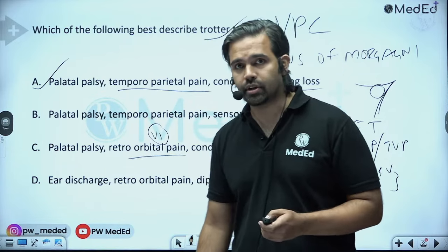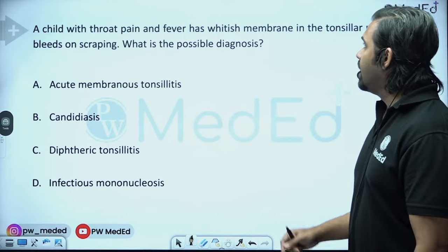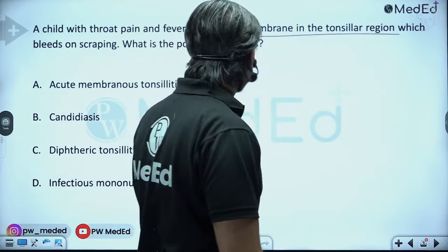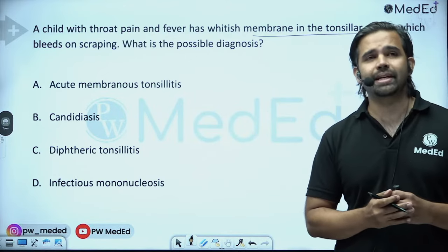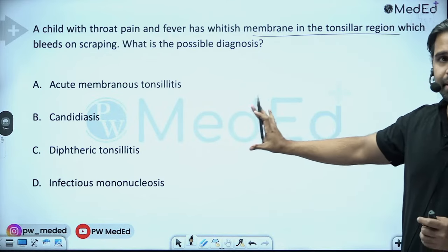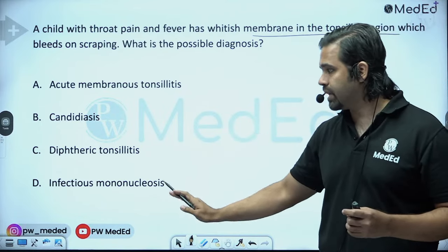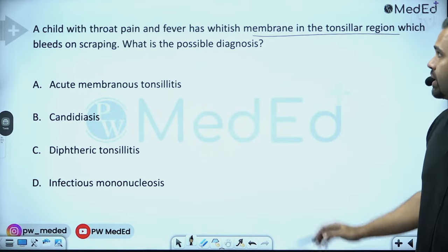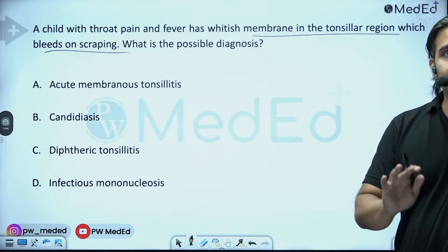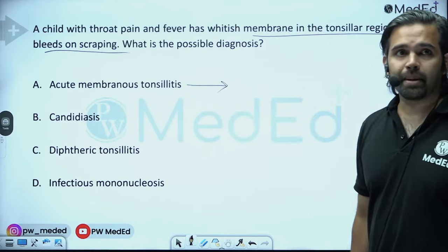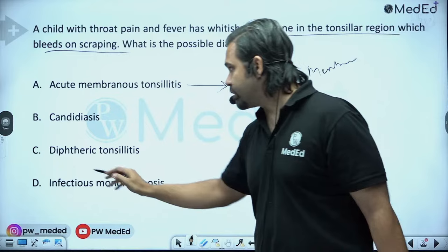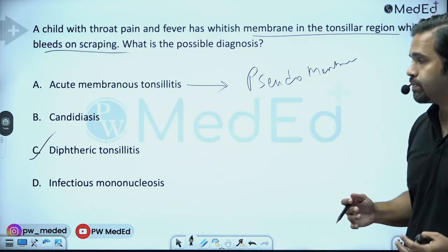Next question: a child presents with throat pain, fever, and a whitish membrane in the tonsillar region that bleeds on scraping. This question is asked many times in FMG. A membrane that bleeds on scraping is a true membrane, not a pseudomembrane. Acute membranous tonsillitis caused by beta-hemolytic streptococcus produces a pseudomembrane — it will not bleed on scraping. Diphtheric tonsillitis is correct, as it produces a true membrane which bleeds on scraping.